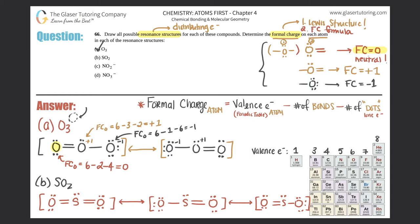Using our generalizations for SO2's oxygens: any oxygen with two bonds has a formal charge of zero. In the first resonance structure, both oxygens have two bonds, so both have a formal charge of zero. The same applies to the corresponding oxygens in the other resonance structures — all two-bond oxygens have a formal charge of zero.